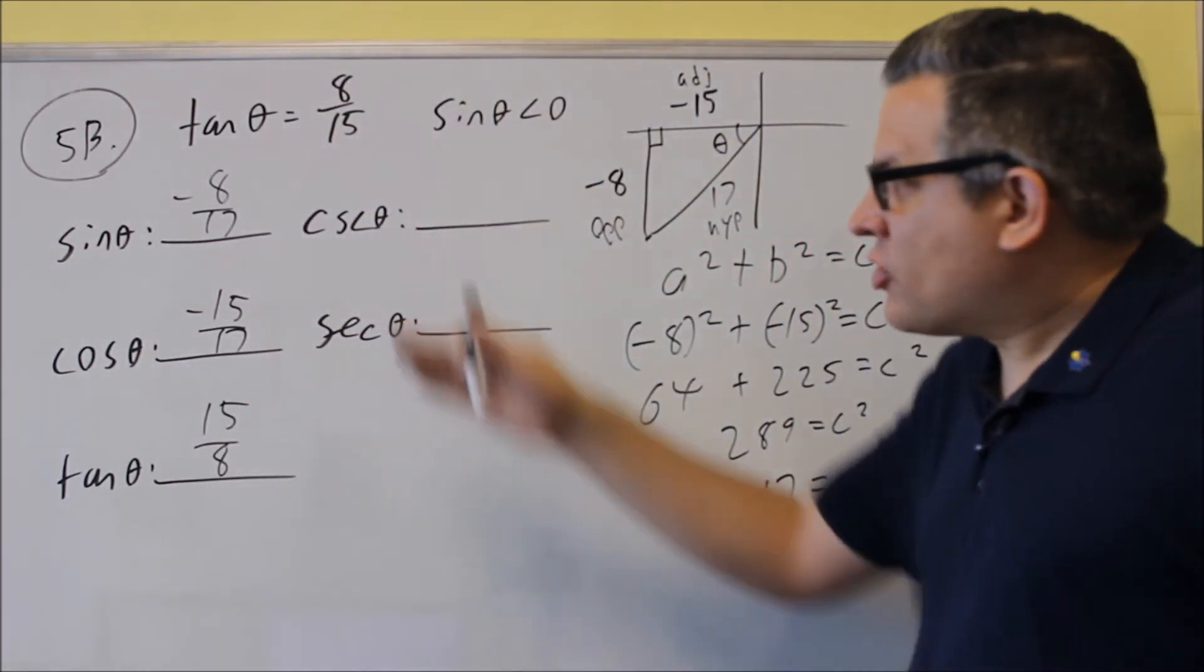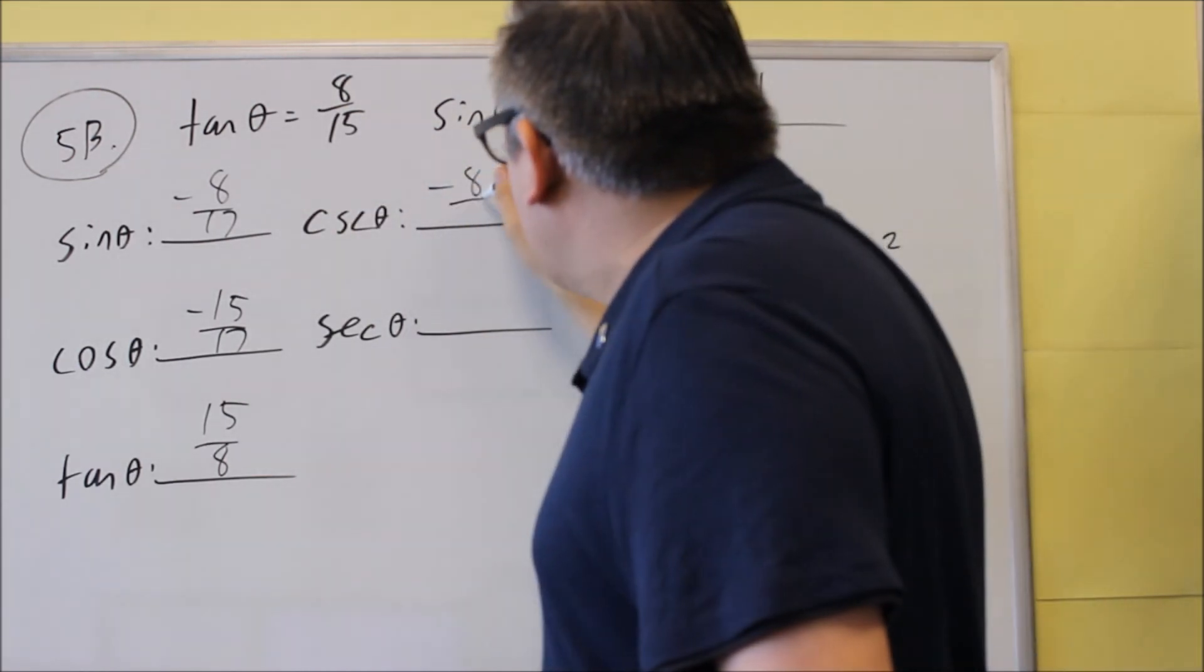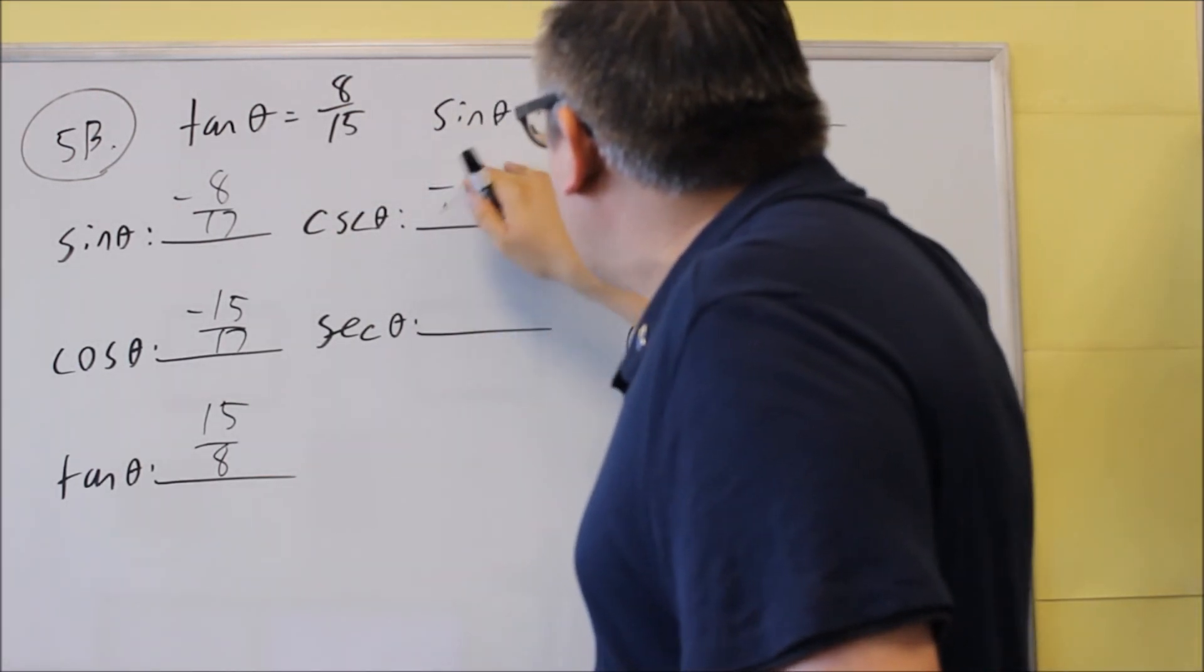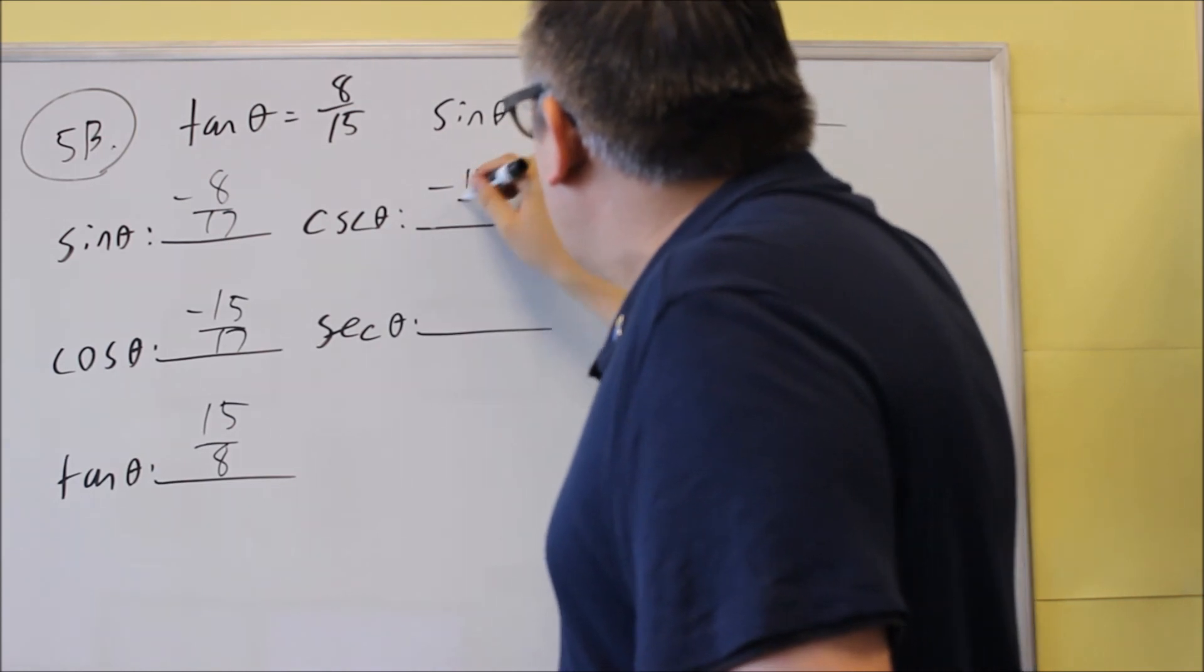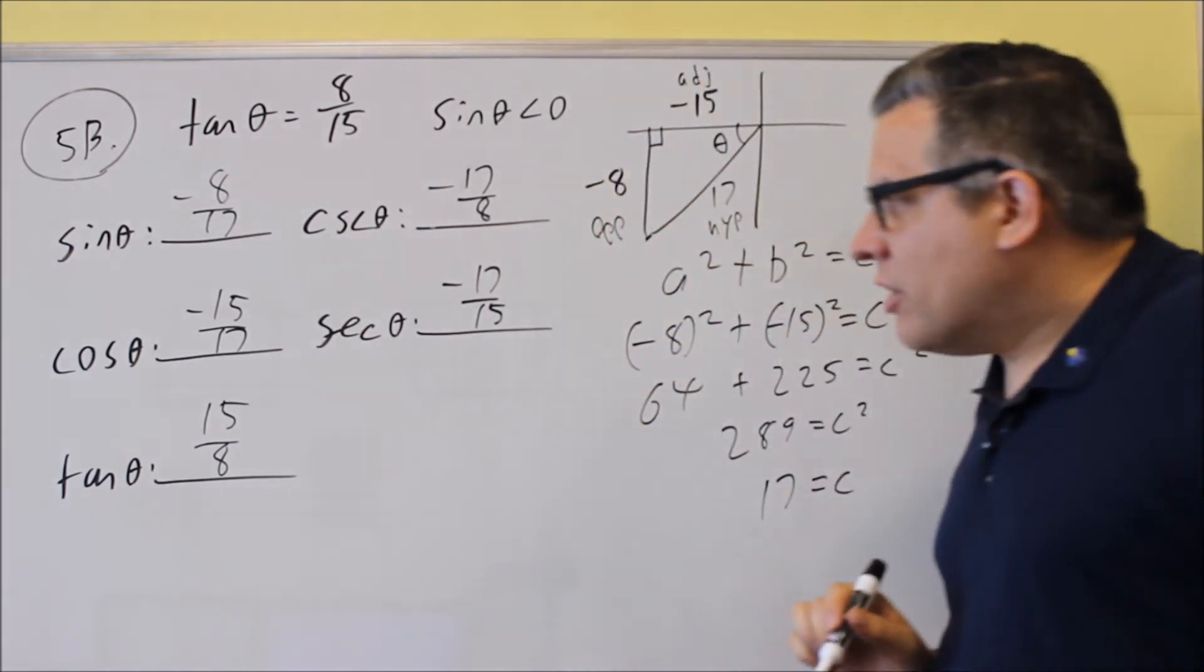These other two are going to be reciprocals. Cosecant is reciprocal of sine. Negative 8, flip this, so negative 17/8. Secant is going to be negative 17/15.